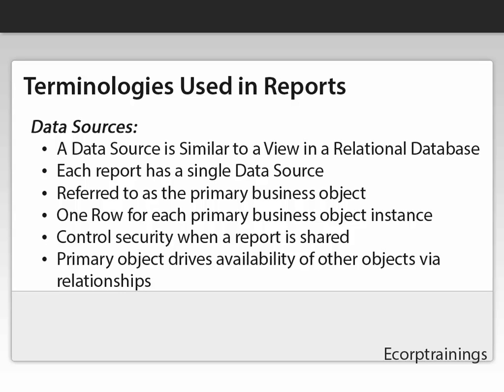Coming to data sources: a data source is similar to a view in a relational database. Each report has a single data source. A data source provides access to a single type of business object, referred to as the primary business object — one row for each primary business object instance. It controls security when a report is shared, and the primary object drives availability of other objects via relationships.